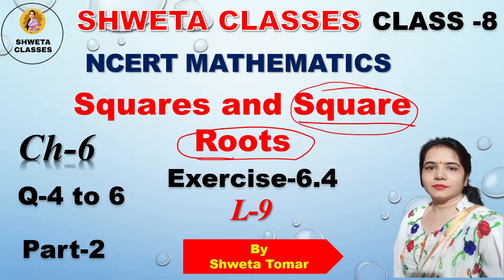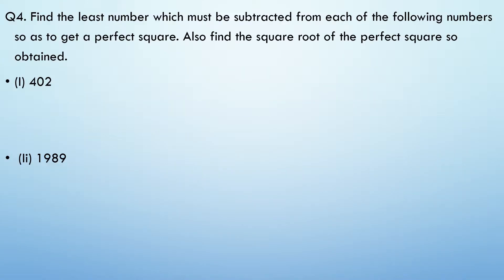Question number 4, 5, and 6. Question number 4: find the least number which must be subtracted from each of the following numbers — 402, 1989, and others given — so that the result becomes a perfect square. After getting the perfect square, you will find the square root using the same division method.